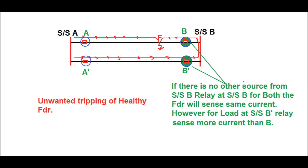Therefore, the load current will add up with the fault current. Therefore, relay at B' will sense more current compared to relay at B. Therefore, it is possible that the B' relay trips before substation B relay.